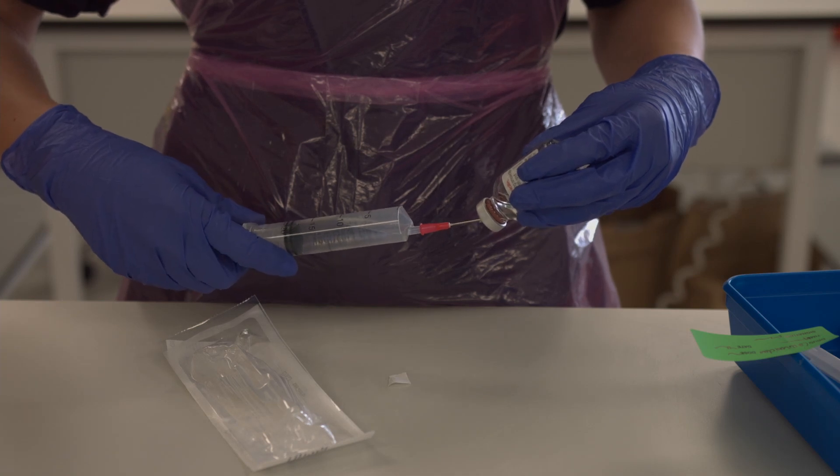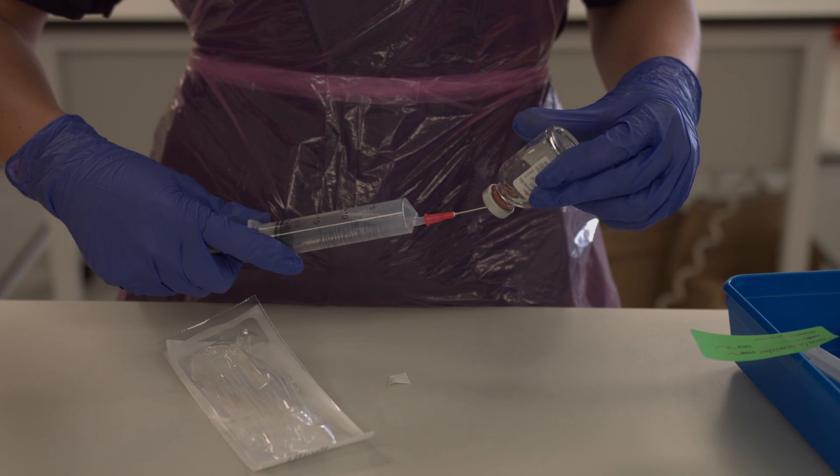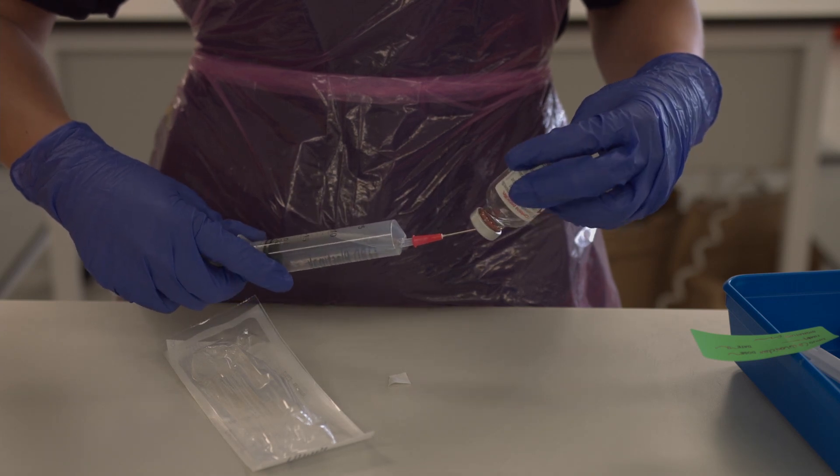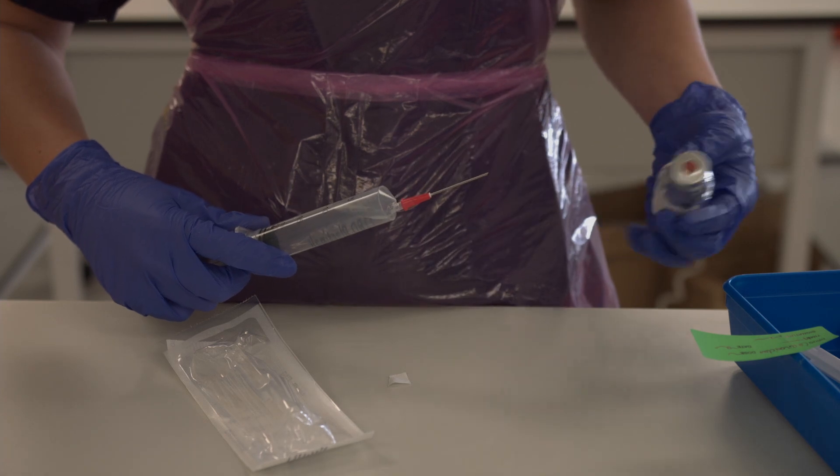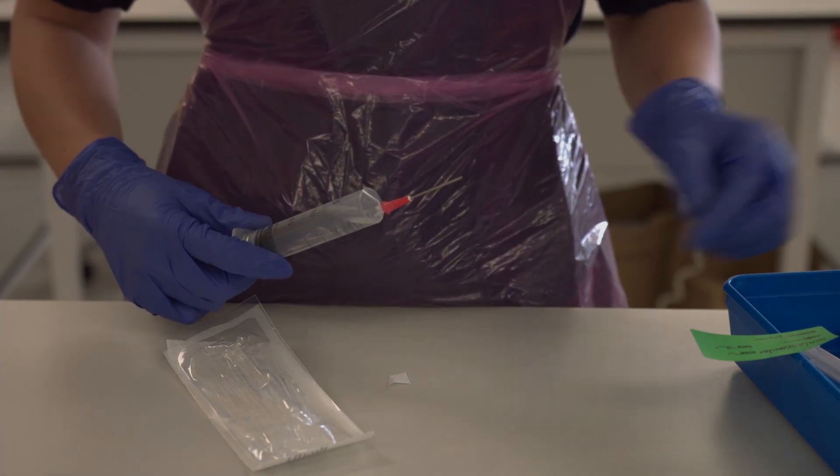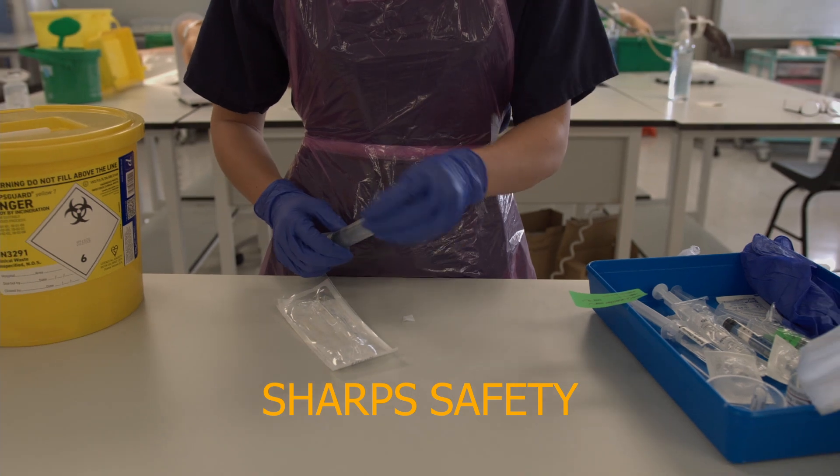You can then withdraw the last bits of solution just by pulling back on the plunger with the needle in the solution. Put your Carmoxiclav bottle into the tray ready for the patient bedside and remove your sharp immediately putting it into the sharps bin.